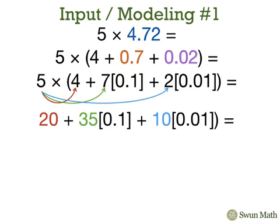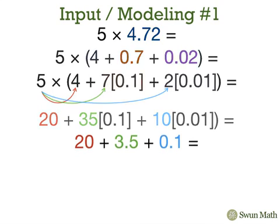This gives us 20 plus 35 times 1 tenth, plus 10 times 1 hundredth. 35 times 1 hundredth becomes 3.5 tenths, and now we're going to add these three values together.